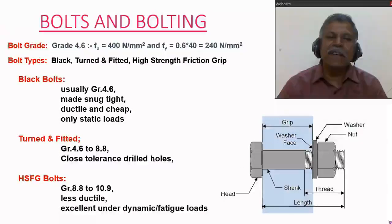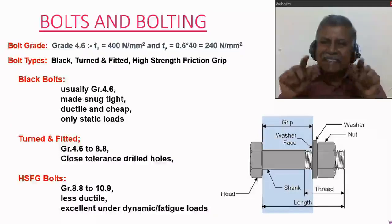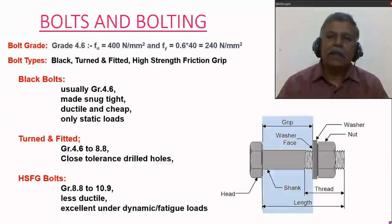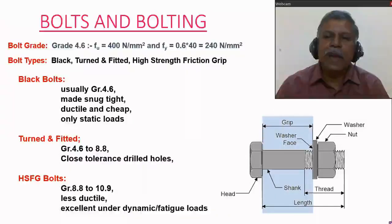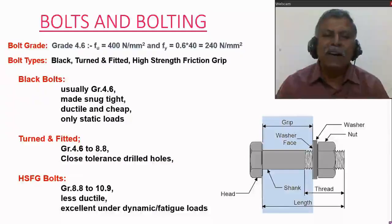Bolts are generally classified into three types. The first one is the black bolt. It is called a black bolt because its colour is almost black. It has either a square head or hexagonal head, and it is usually of grade 4.6. The maximum tightness that can be achieved by a person giving full effort using a standard spanner is called the snug tight condition. Black bolts are ductile in nature because they are made up of mild steel. They are cheaply available in the market and can only be used for static loads.